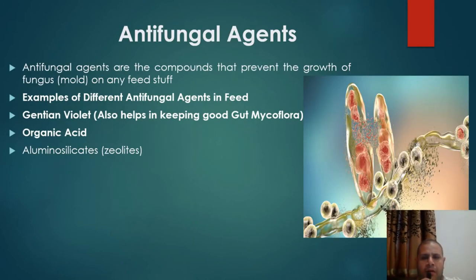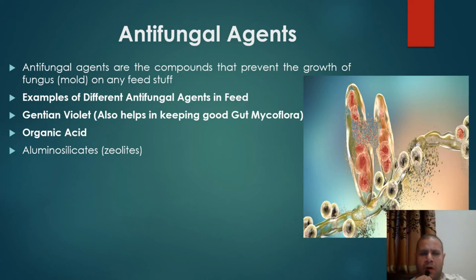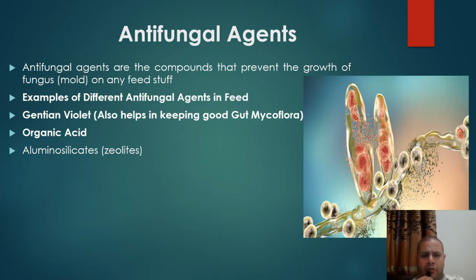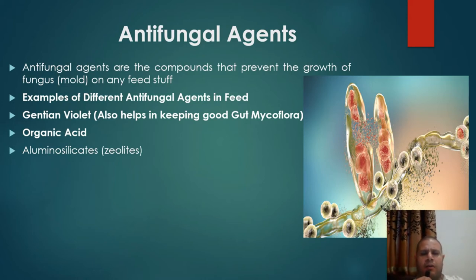The next feed additive is antifungal agents. Antifungal agents are compounds that prevent the growth of fungus and mold on any feedstuff. Examples of antifungal agents used in feed include: number one, gentian violet, which also helps in maintaining good gut mycoflora; number two, organic acids; and number three, aluminosilicates/zeolites.